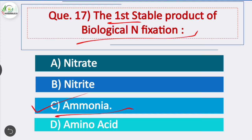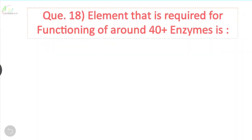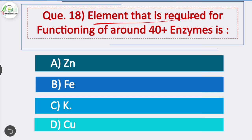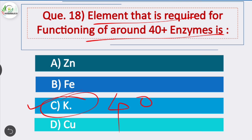Question 17: The first stable product of biological nitrogen fixation is ammonia — option C is correct. Question 18: The element required for functioning of more than 40 enzymes — potassium is the element required for functioning of more than 40 enzymes. Potassium activates many enzymes under required conditions.